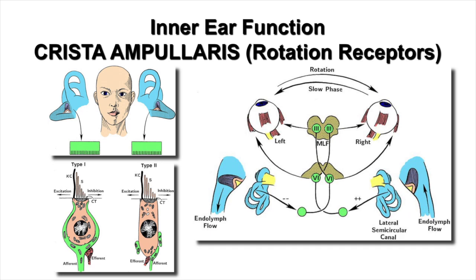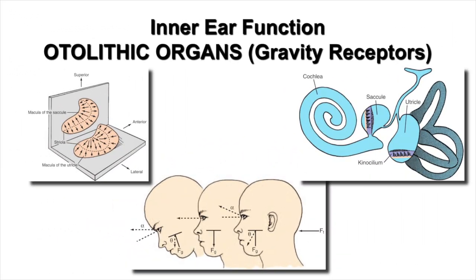These receptors are paired, and as we turn or tilt our head, the firing rate goes up on one side and down on the other. Normally, it's equal and opposite, allowing our brain to understand how we're changing our head position in space. This is also true for the otolithic or gravity receptors — responses going back to the brain are excited on one side and inhibited on the other, and the brain constantly does the math to understand head position.